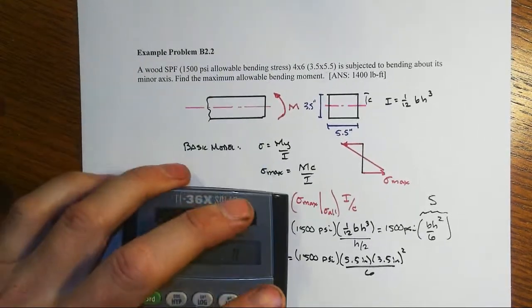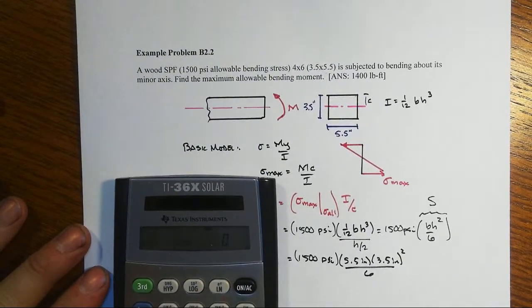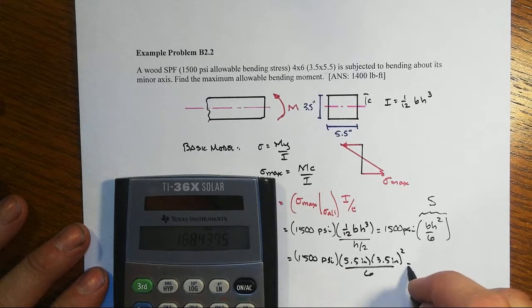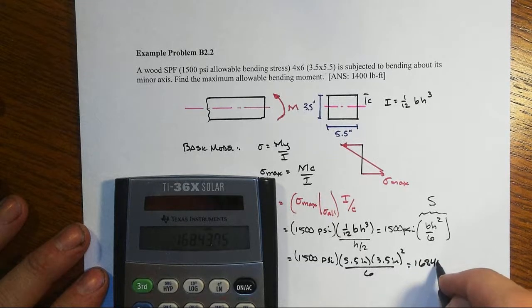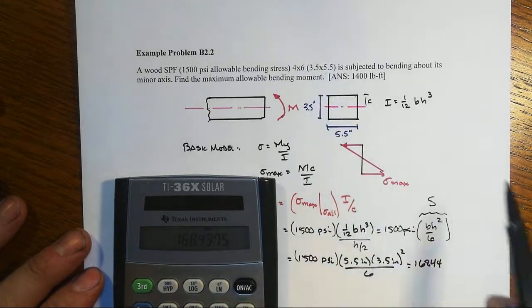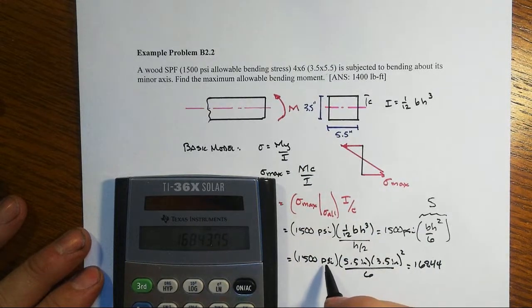Let's put in our calculator: 1500 times 5.5 times 3.5 squared, all divided by 6, and we get 16,844. You say, wait a minute, that's not what the answer says, that's 1400 pound-foot.